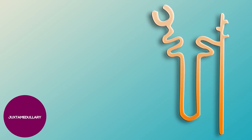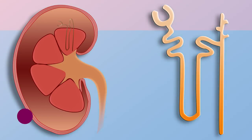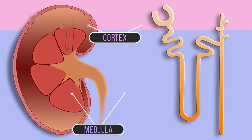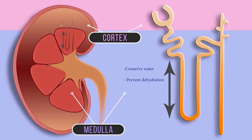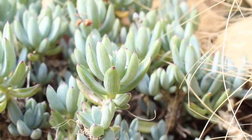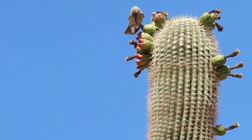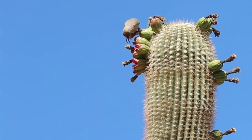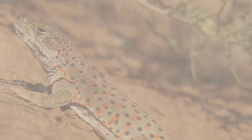About one-third of our nephrons have long loops of Henle dipping down into the medulla of the kidneys. The function of the loop of Henle is to conserve water and thus prevent dehydration. The longer the loop of Henle, the more concentrated the urine that can be produced. This is a very useful adaptation to life on land. Birds and mammals are the only vertebrates with loops of Henle.